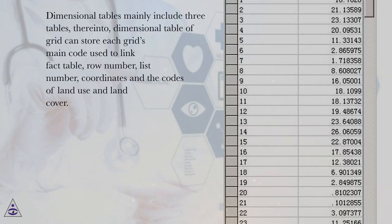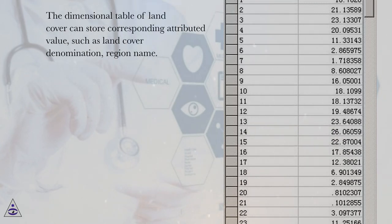Dimensional tables mainly include three tables. Dimensional table of grid can store each grid's main code used to link fact table, row number, list number, coordinates and the codes of land use and land cover. The dimensional table of land cover can store corresponding attributed value, such as land cover denomination, region name.